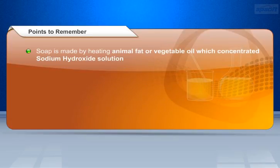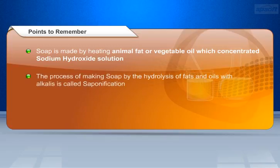Soap is made by heating animal fat or vegetable oil with concentrated sodium hydroxide solution. The process of making soap by the hydrolysis of fats and oils with alkalis is called saponification.